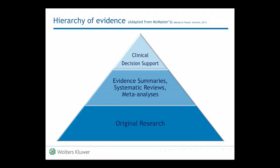We do know that research evidence is not created equal. So it's really important when healthcare providers look at research from a search, they need to determine what level of research they're looking at. At the base, we have all the original research studies — things like randomized control studies. The next level up would be the systematic reviews and meta-analyses, which involve a critical appraisal and synthesis of all the original research around a certain topic. That's considered the higher level of research in the hierarchy of evidence.